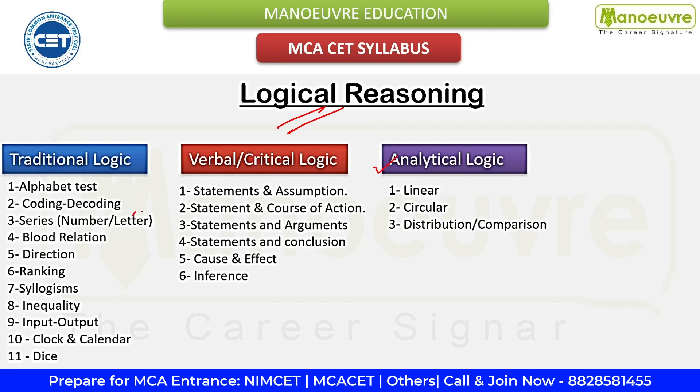Next is Logical and Abstract Reasoning. This section consists of traditional logic, verbal critical logic and analytical logic. This section basically tests your ability to analyze and solve problems using logic and reasoning skills. Practice solving questions in Manure MCA entrance preparation books, and try solving puzzles, brain teasers and other similar exercises to improve your problem-solving skills. This will help you strengthen your reasoning and aptitude concepts as well.